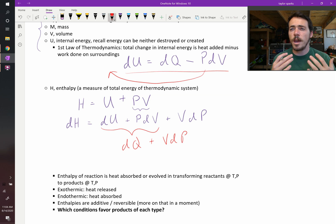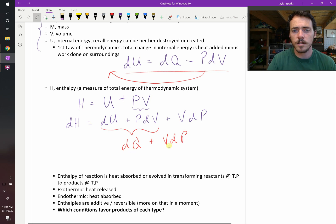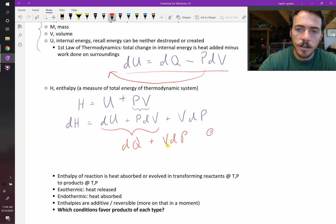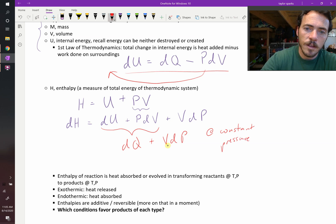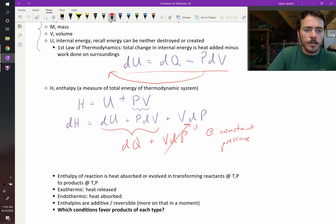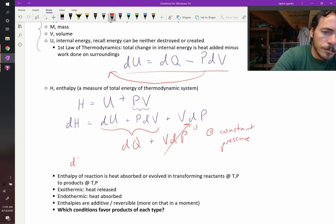So when somebody says that there's a change in enthalpy of the system, we know what they're really saying is that there's a change in heat plus VdP. And if this is happening at constant pressure, let's say you're doing this all in air at one altitude, the pressure's not changing. So if this is at constant pressure, then this goes to zero. So in other words, the change in enthalpy of the system, dH, is just equal to dQ.